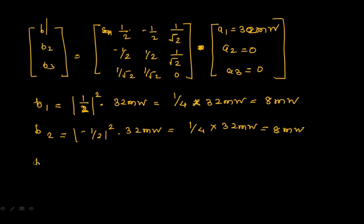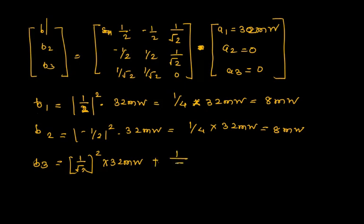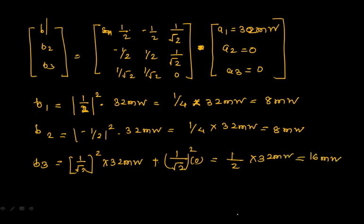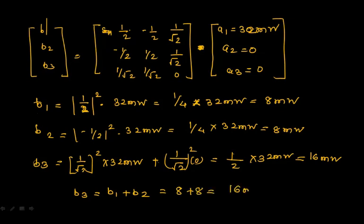For B3: B3 = (1/√2)² × 32 mW + (1/√2)² × A2 = (1/2) × 32 mW = 16 milliwatts. So B1 = 8 mW, B2 = 8 mW, and B3 = 16 mW. As per the H-plane T characteristic, B3 must equal B1 + B2 = 8 + 8 = 16 milliwatts. Adding all powers gives 8 + 8 + 16 = 32 milliwatts, confirming power conservation.